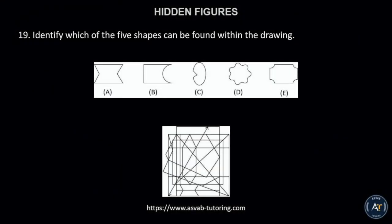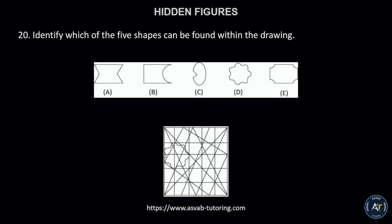Number 19. Identify which of the five shapes can be found within the drawing. The correct answer is letter A. Number 20. Identify which of the five shapes can be found within the drawing. The correct answer is letter D.